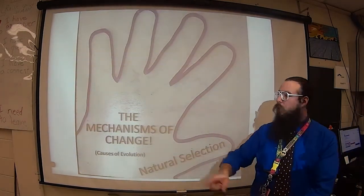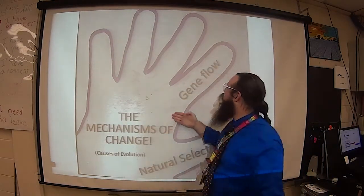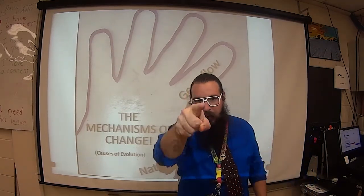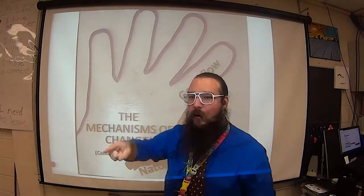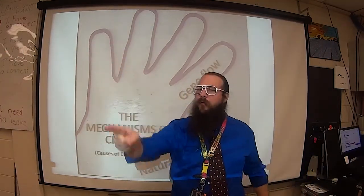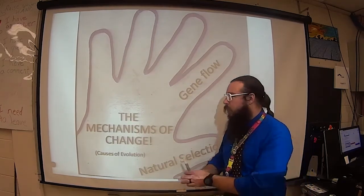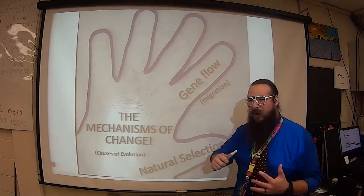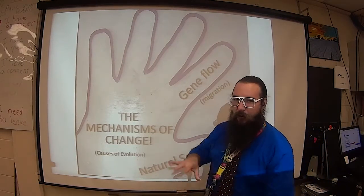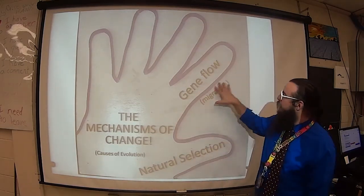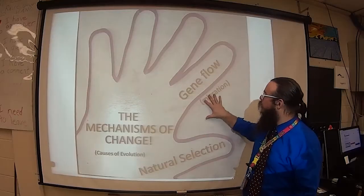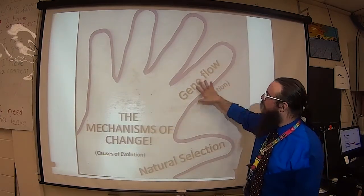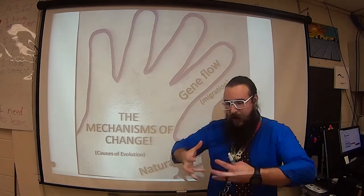Our next mechanism goes on the index finger: gene flow. I remember this one because if you point at someone, like telling them to go that way, that's the universal symbol for 'you, get on out of here.' Gene flow — organisms go. This is our fancy technical term for migration. You shouldn't think of an organism just as an individual; think of it as a walking bag of genetic material. When individuals migrate from one population to another, we have gene flow because they're taking their genes with them.